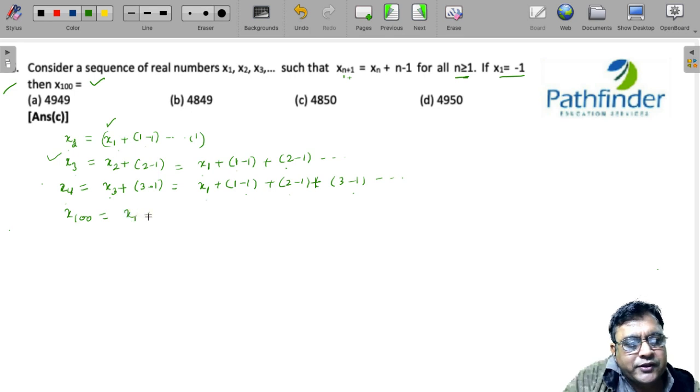x100 will be x1 + 1 - 1 + 2 - 1 and so on till 99 - 1. See, here we had 3 so the last bracket was 2. When we have x100, the last bracket should have 99 - 1.